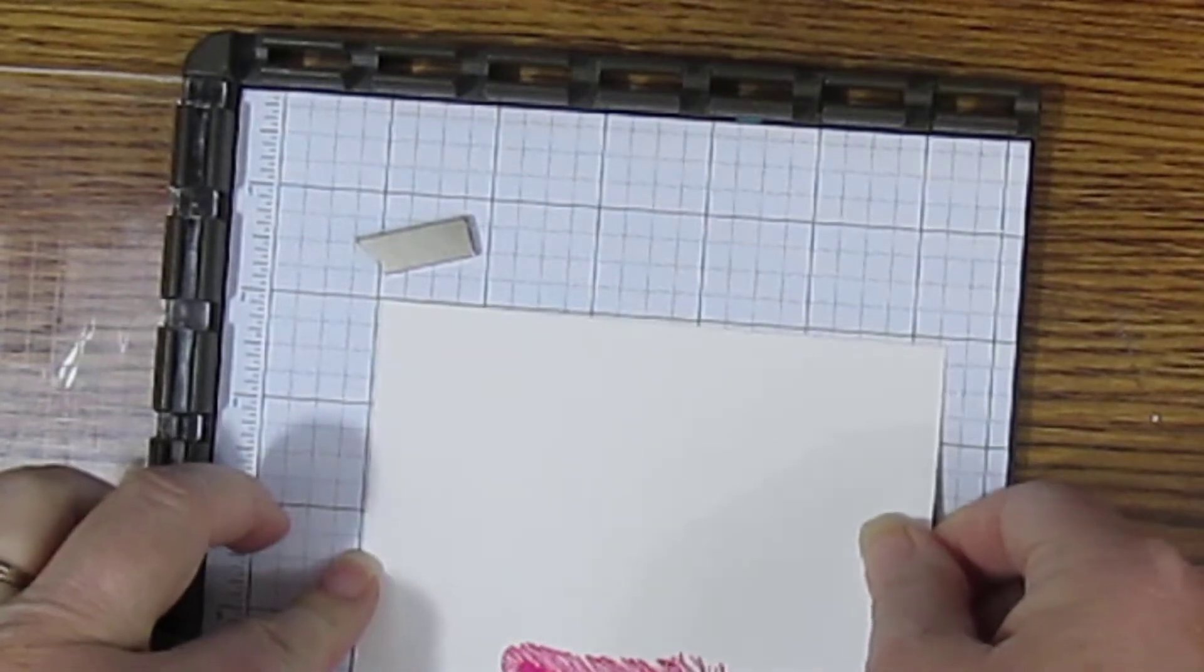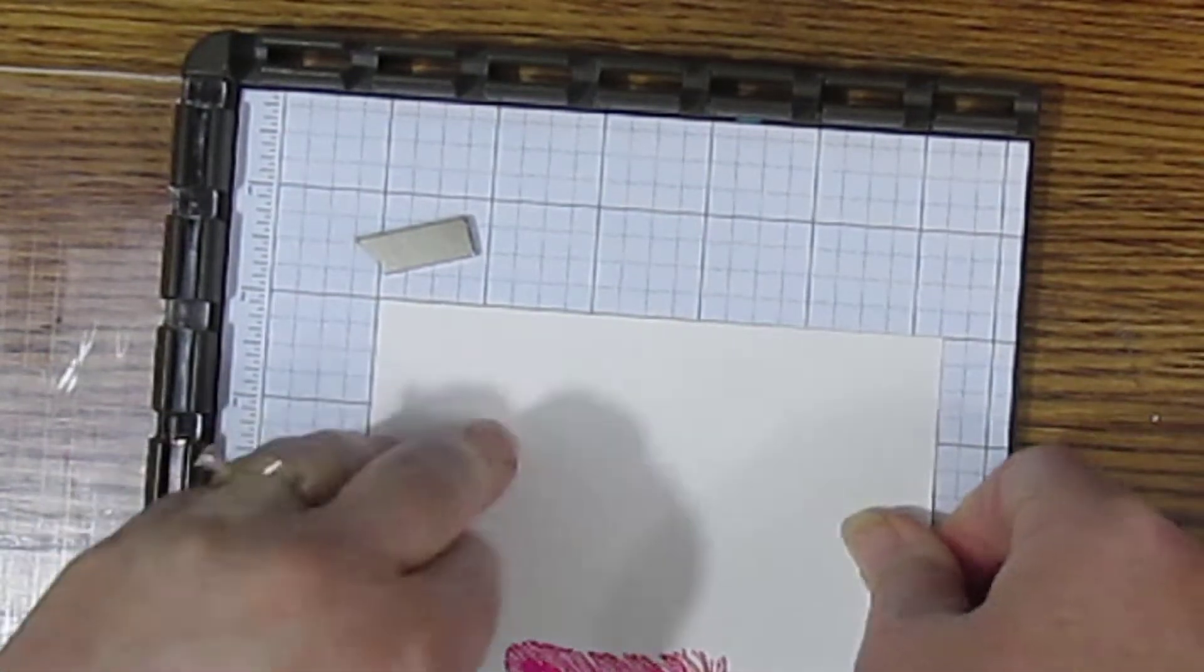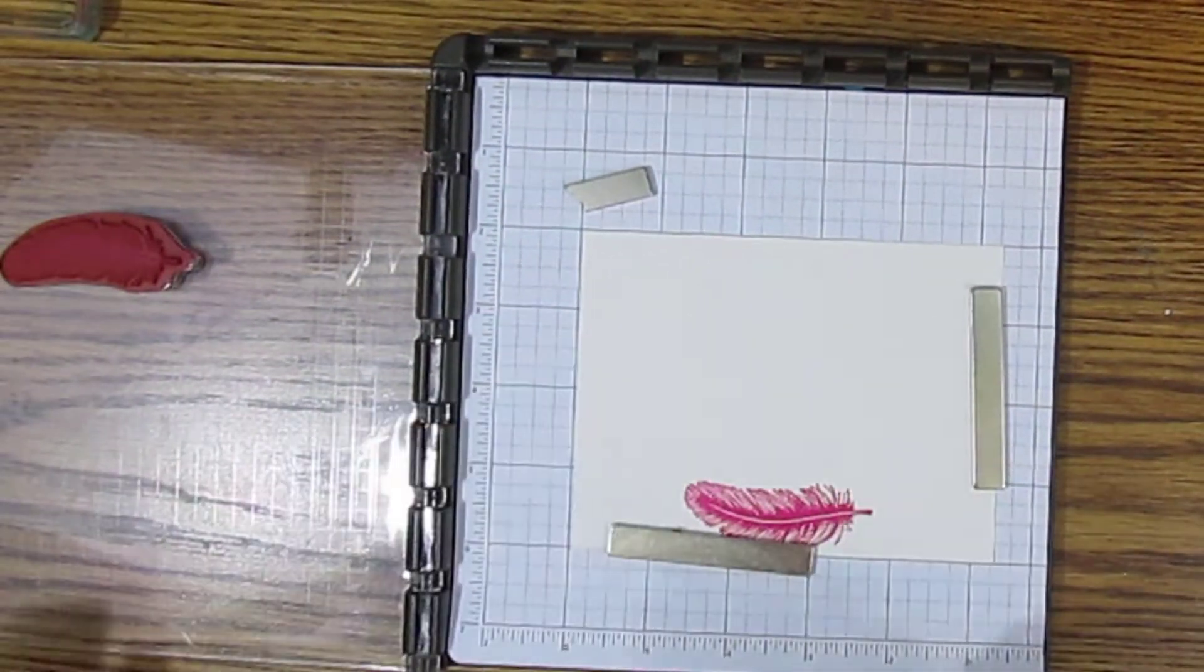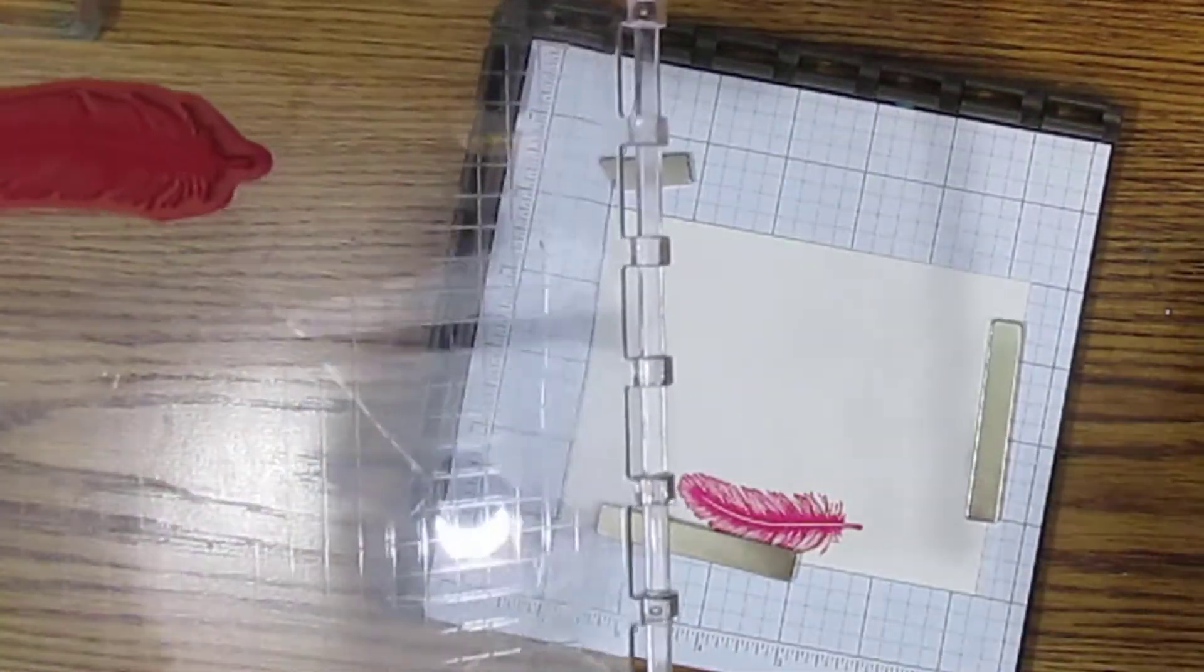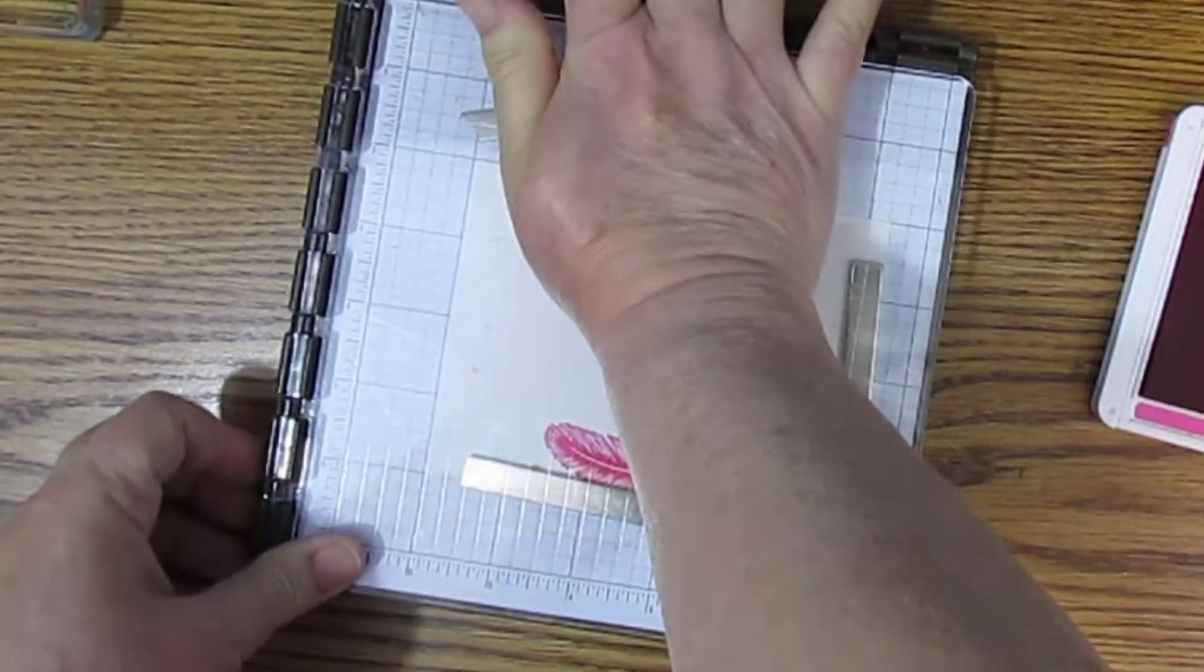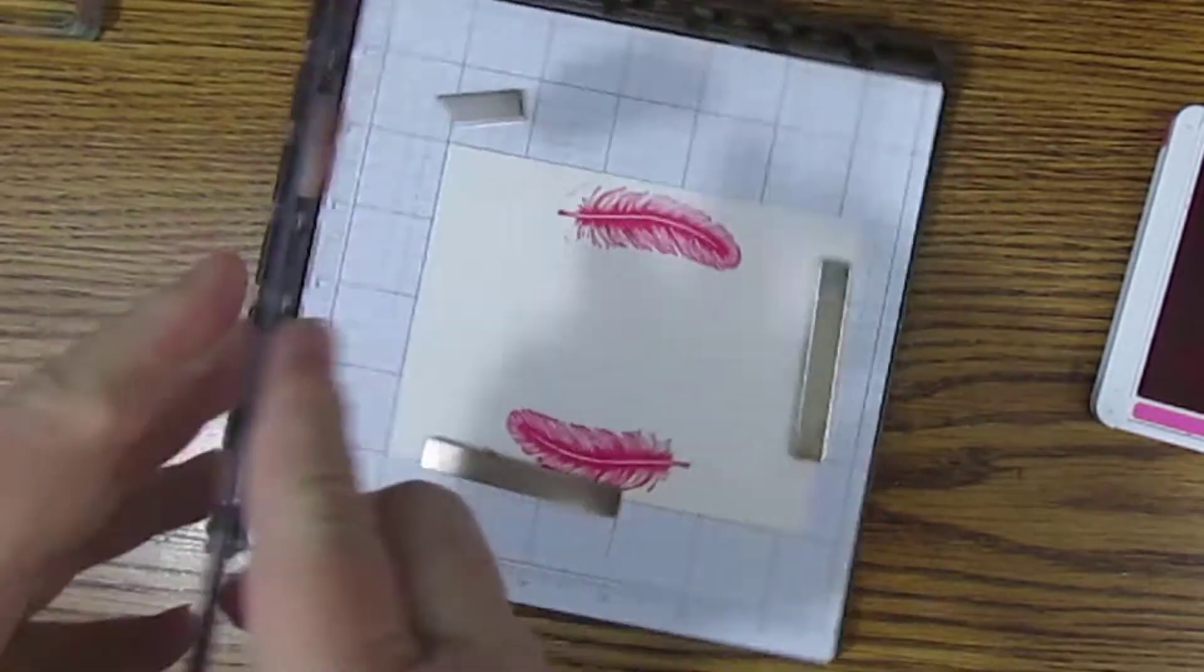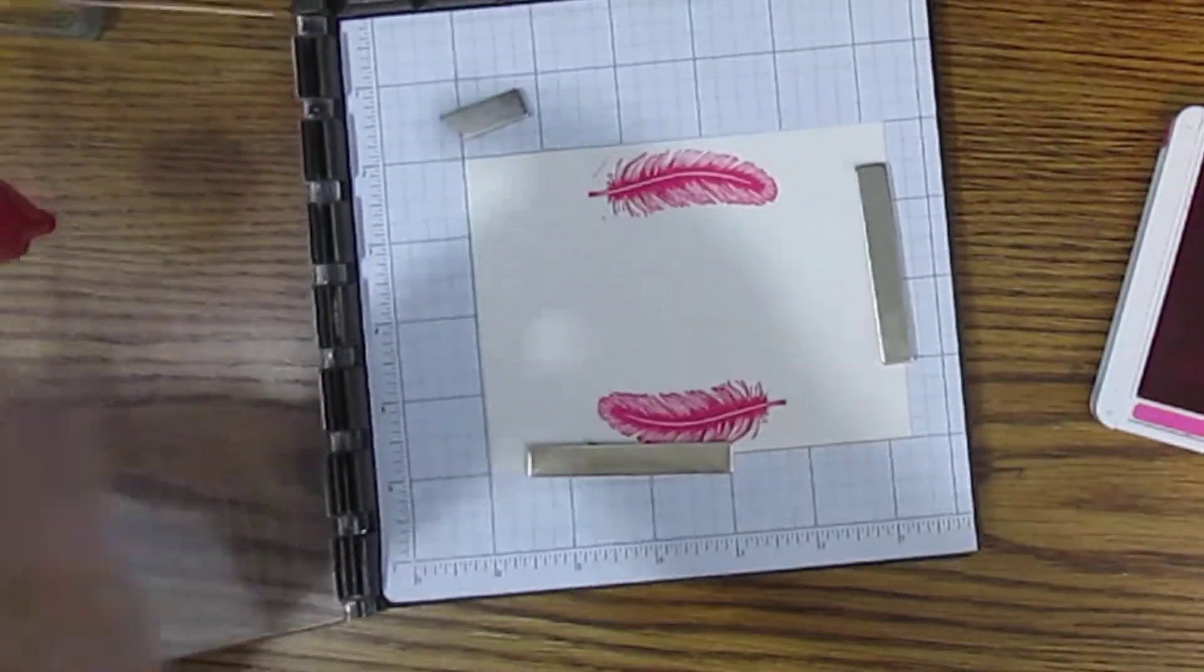Now we are going to rotate the cardstock, line it up in the exact same space, ink up our stamp again, and get another perfect stamp. This time we will clean off the stamp.